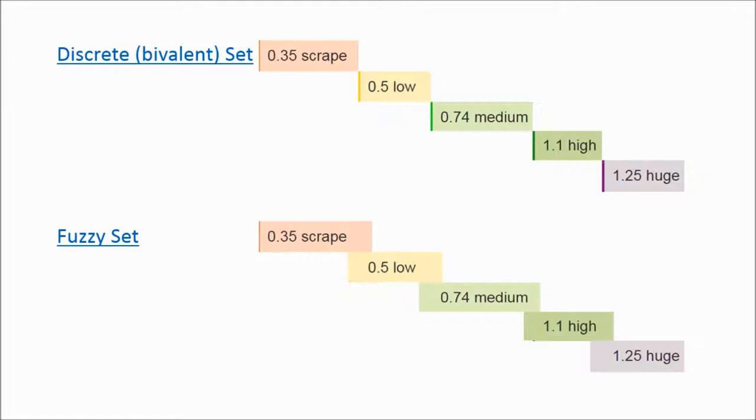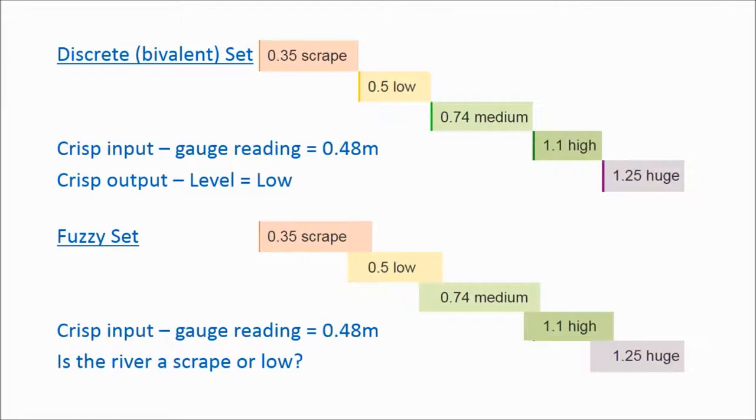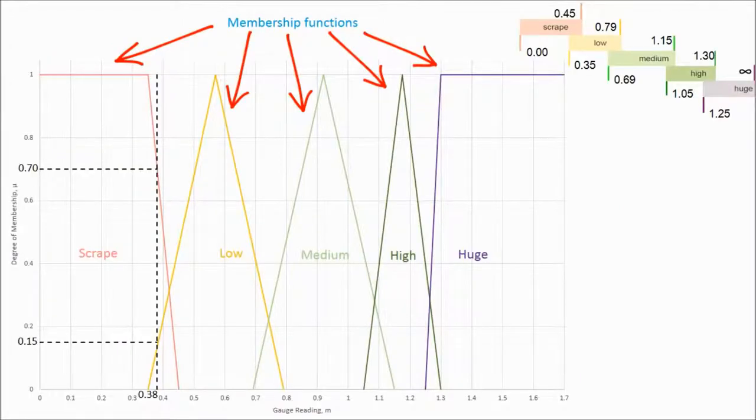See how the boundaries between each category in the fuzzy set overlap, whereas those in the crisp set are clearly defined? The distinction between categories is less clear. The degree to which the crisp input belongs to each category is described by membership functions. These are combined to create a fuzzy set. See how they overlap?